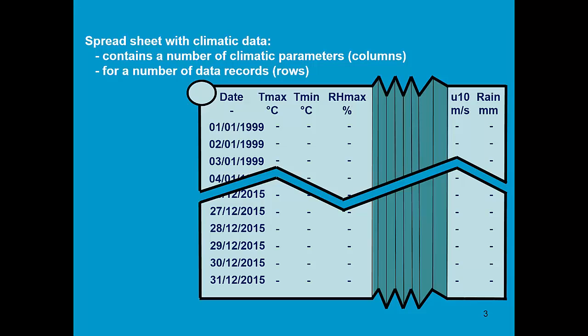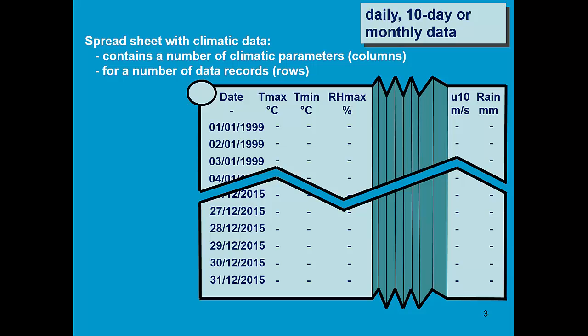Here we see a spreadsheet with climatic data. It contains a number of climatic parameters, which are in the columns, for a number of data records, which are the rows. It can contain daily, 10-day, or monthly data. We are going to replace missing data with a default value of minus 999, such that the program can recognize it.